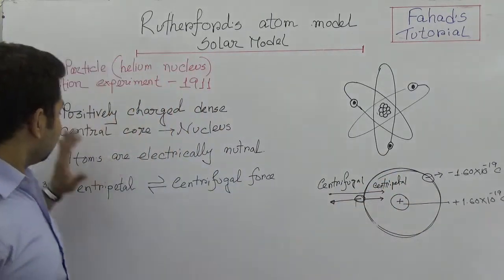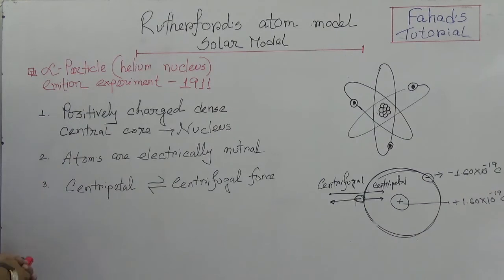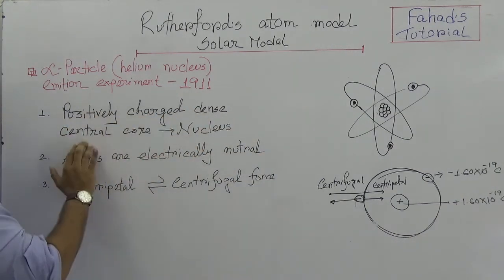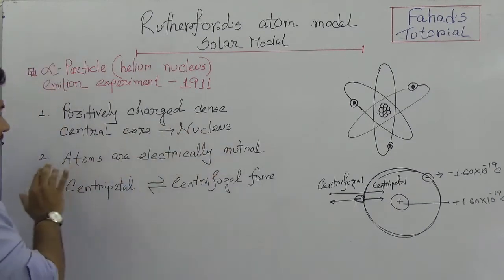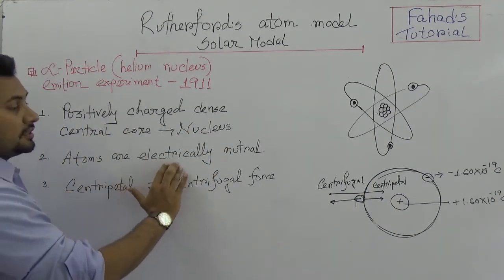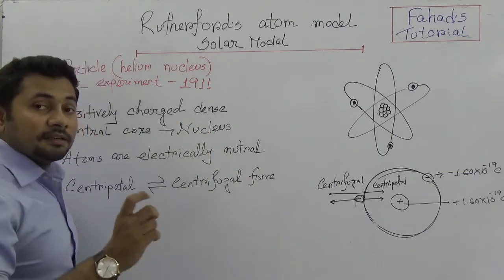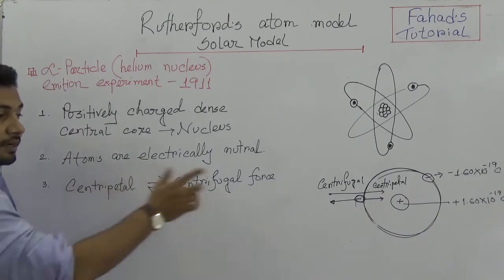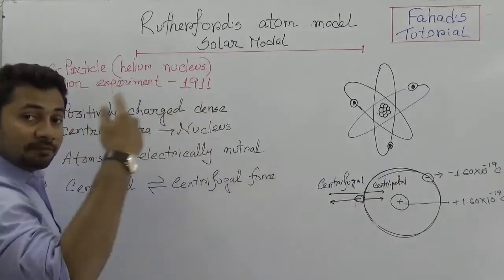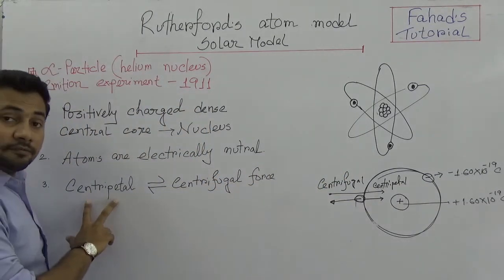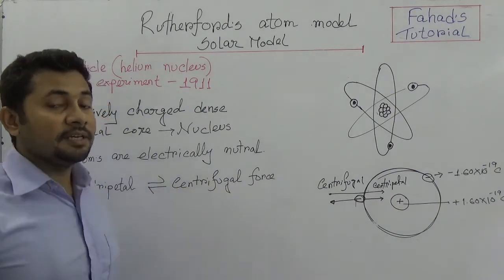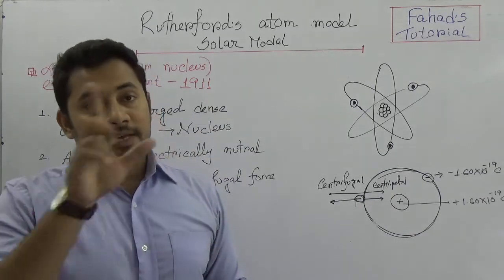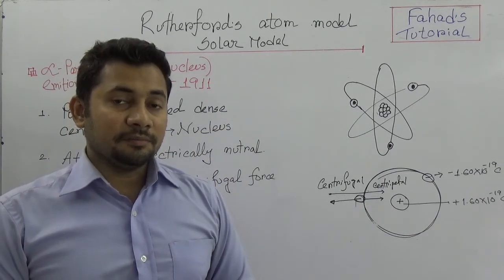To summarize, Rutherford stated three things: number 1, in the center of the atom we have a positively charged dense central core known as the nucleus; number 2, atoms are electrically neutral because the number of electrons and the number of protons are equal; and number 3, when electrons revolve around the nucleus, the centripetal force and the centrifugal force are equal, allowing the electron to remain in the same orbital pathway. This is Rutherford's model.